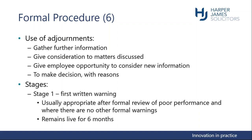Looking at the stages of the formal procedure: stage one is a first written warning. The ACAS Code recommends at least two warnings are given before an individual is dismissed for poor performance, unless it is gross negligence, the employee is still in their probationary period, or the matter is serious enough to warrant a final written warning. The first written warning is usually appropriate after a formal review of poor performance where there are no other formal warnings on record. Under the ACAS non-statutory guidance, it is recommended a first written warning remains live for six months, though this will depend on whether you have an existing capability procedure and the timeframe for warnings in that procedure.